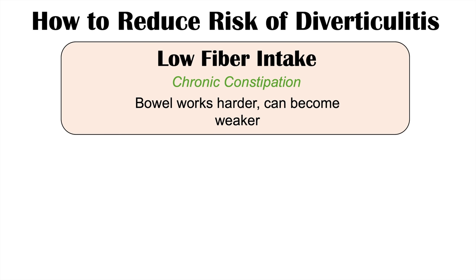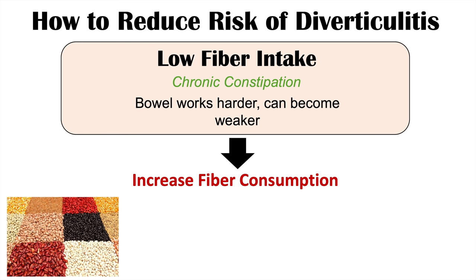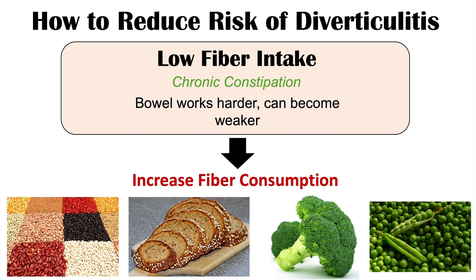So what can we do? We can increase fiber consumption to reduce the risk of diverticulosis and diverticulitis. You can get lots of fiber from different dietary sources like legumes — beans — whole grains, vegetables like broccoli, and green peas. If you're younger and don't have diverticulosis, you can actually prevent or reduce your risk of getting it by having a diet high in fiber.